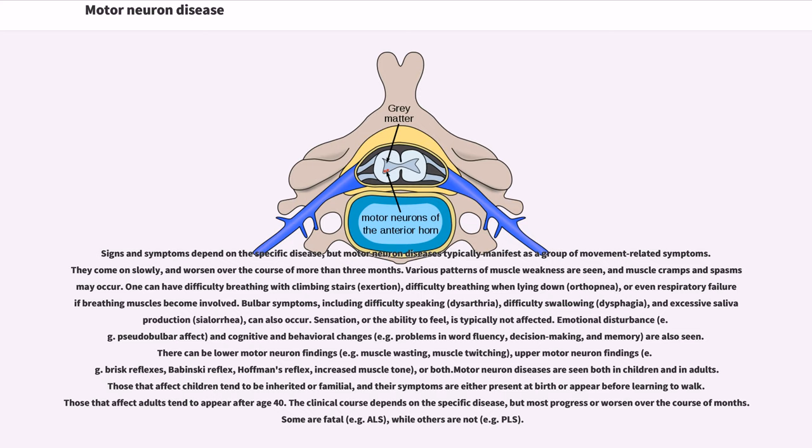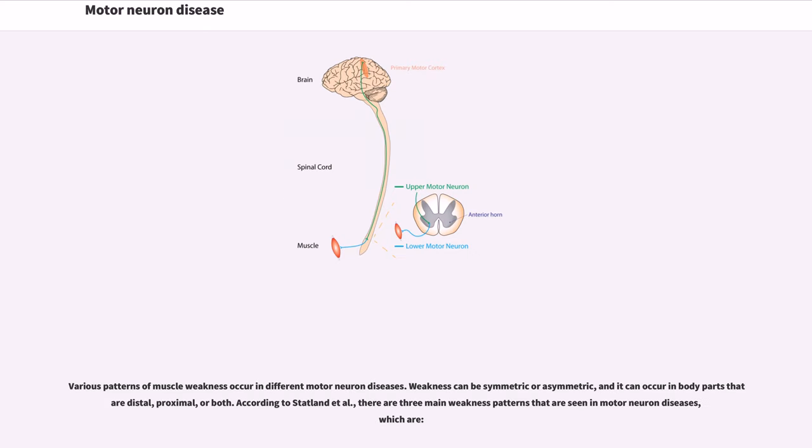The clinical course depends on the specific disease, but most progress or worsen over the course of months. Some are fatal, for example ALS, while others are not, for example PLS. Various patterns of muscle weakness occur in different motor neuron diseases. Weakness can be symmetric or asymmetric, and it can occur in body parts that are distal, proximal, or both.